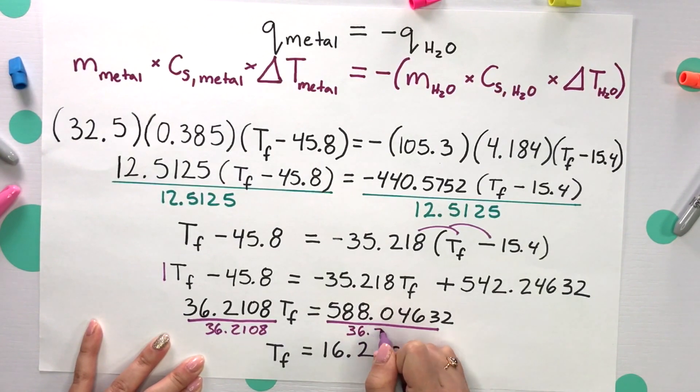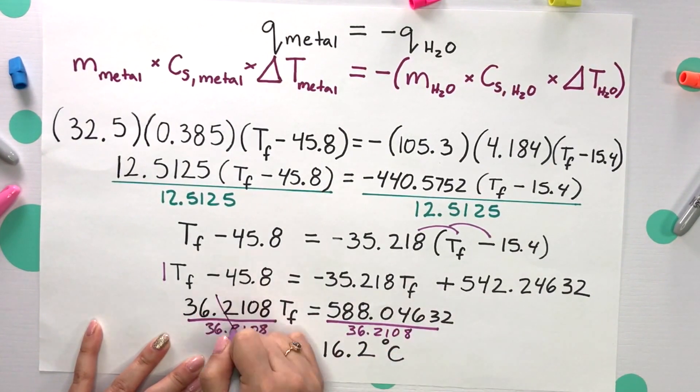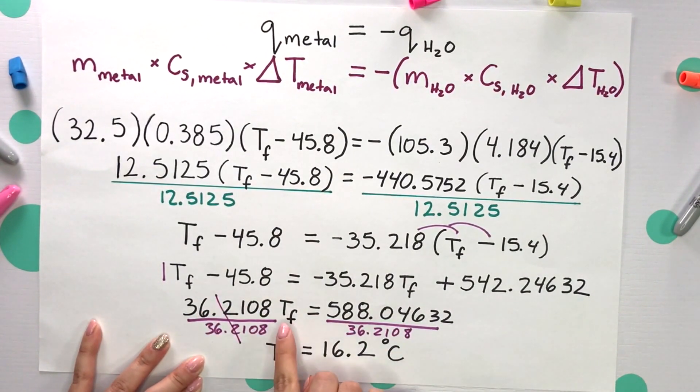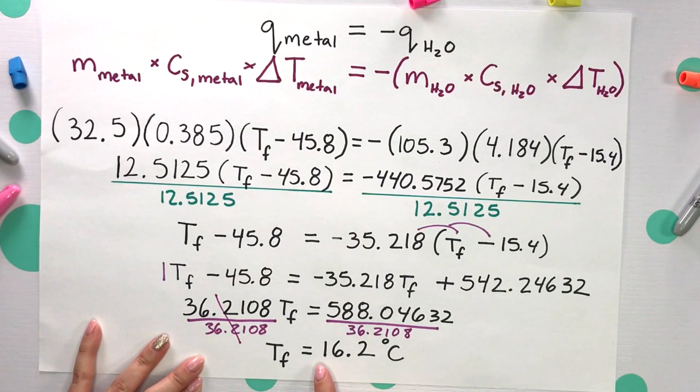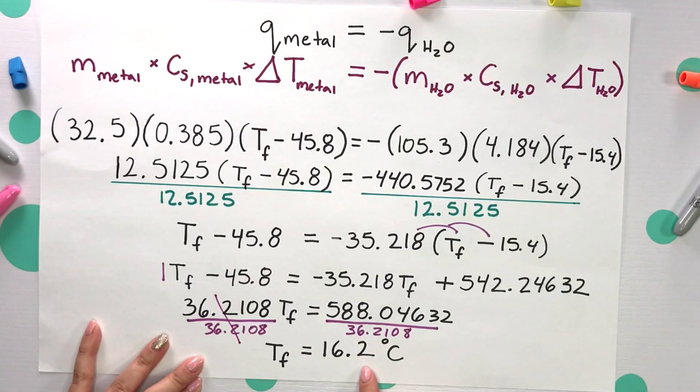Dividing both sides by 36.2108, the T final terms cancel, giving us our final temperature, which is 16.2 degrees Celsius.